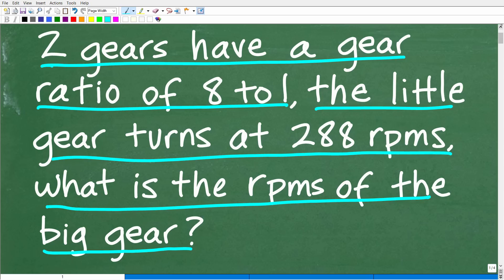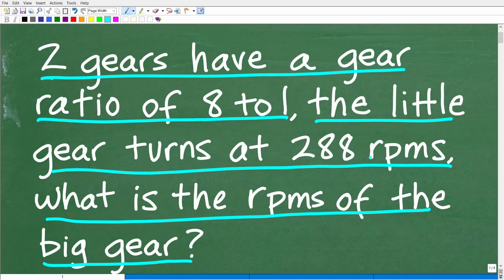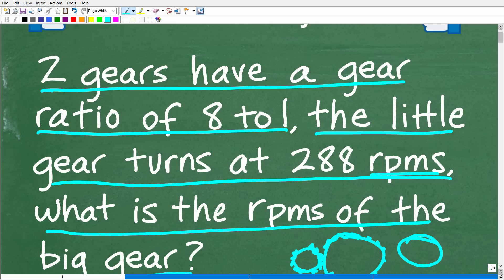Now, some of you may be a little bit lost in terms of the nomenclature. RPM stands for revolutions per minute. Hopefully you know what a gear is. A gear are basically mechanical pieces that are found in transmissions or clocks or watches. Basically, there's one little gear with gear teeth, and it turns another gear. I just want to make sure you understand the problem.